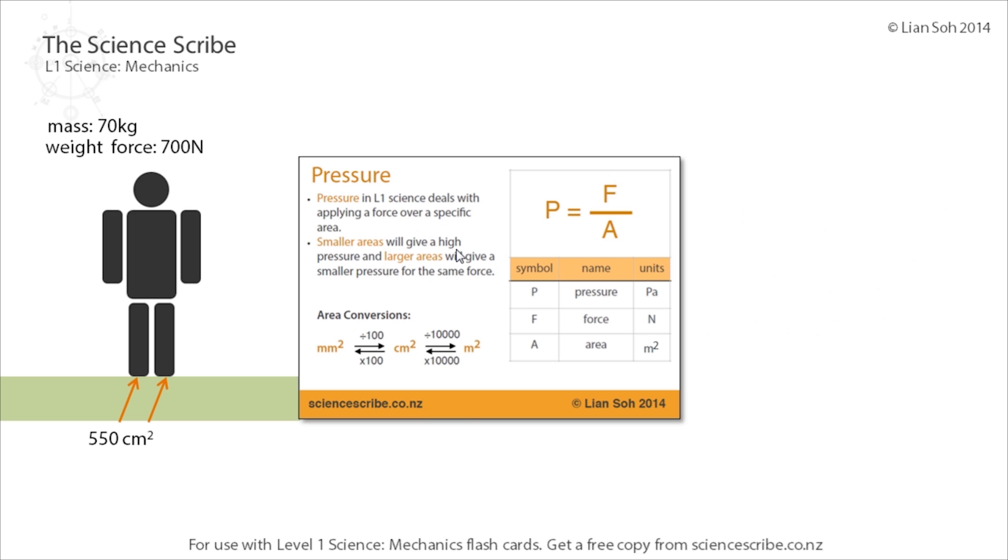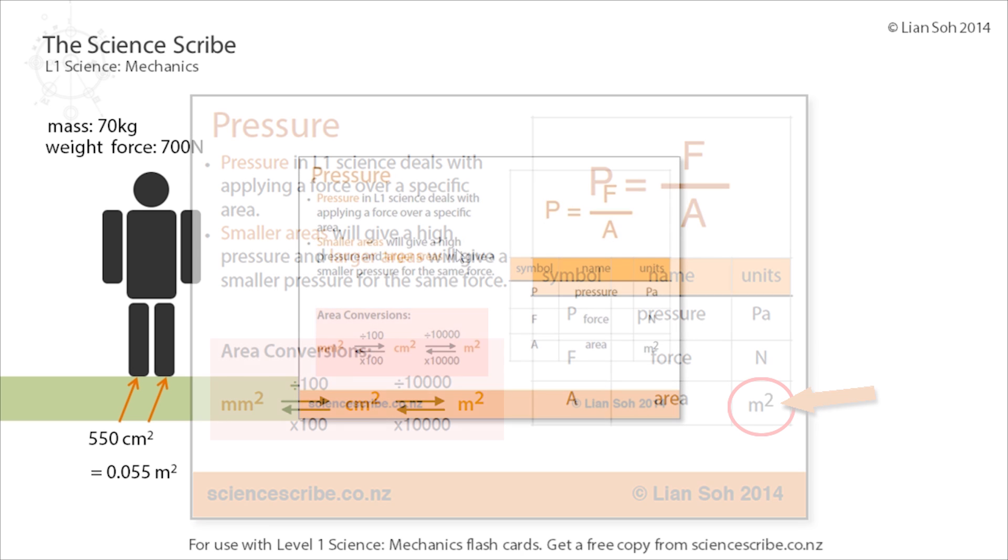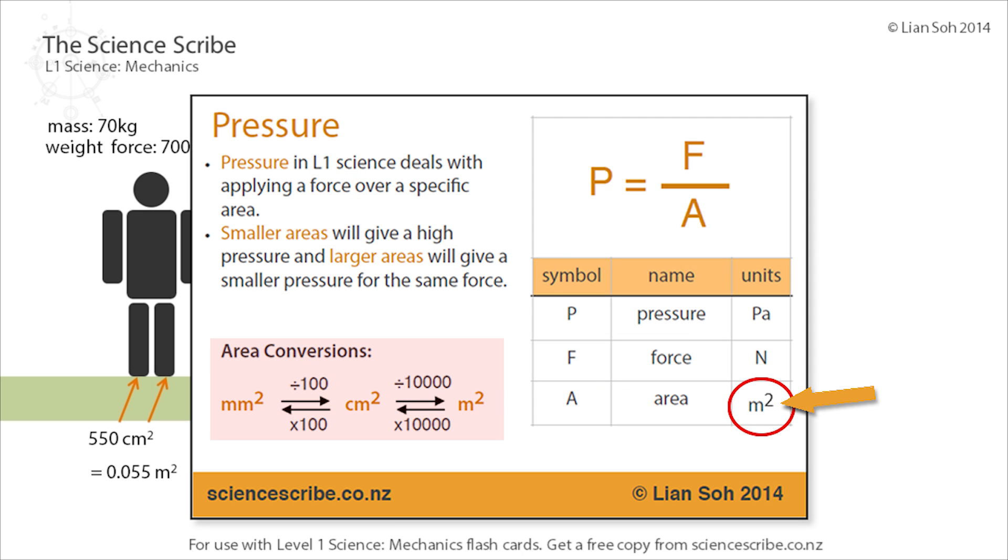Now if I wanted to work out how much pressure there is between the feet and the ground, I have to first convert the centimeters squared area to meters squared, because this formula P equals F over A requires the area units to be in meters squared. I've got in the flashcard some unit conversions that you can use. To change centimeters squared to meters squared, we divide it by 10,000.